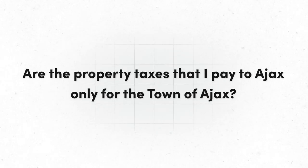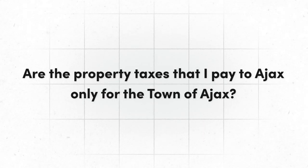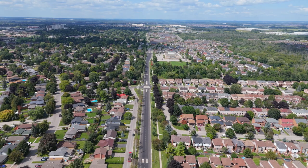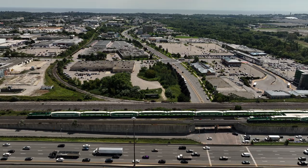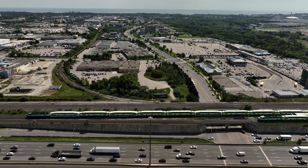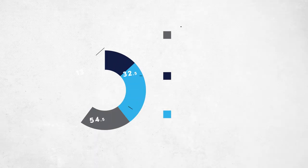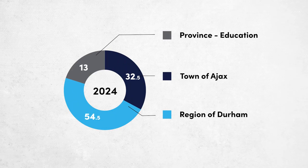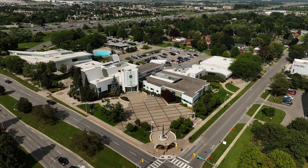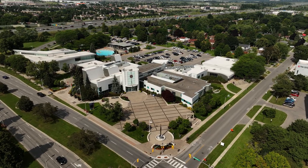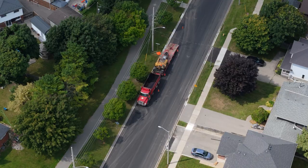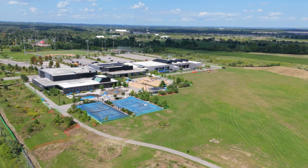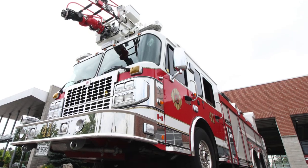Are the property taxes that I pay to Ajax only for the town of Ajax? No, the tax bill issued by the town also includes taxes payable to the Region of Durham and the province. Only 32.5% of the property taxes that you pay go to the town of Ajax. These taxes pay for local municipal services such as road maintenance, parks, recreation and culture, fire services, and planning.